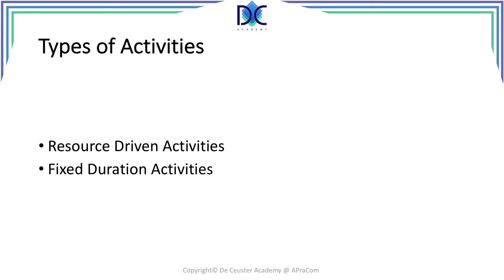Let's have a look at the different types of activities we may encounter. In the previous session we were estimating the duration of activities, but we have to understand more about the different types of activities we can encounter. There are two main types of activities: the first type are resource-driven activities, and the second type are fixed duration activities.